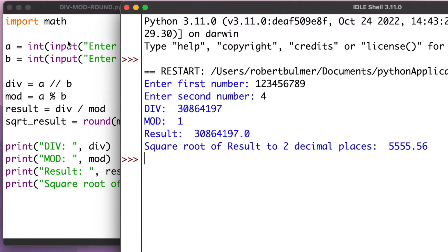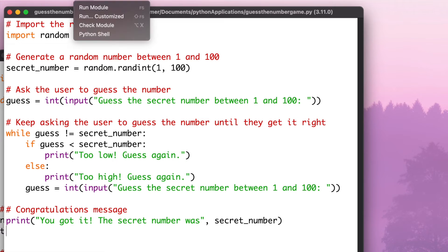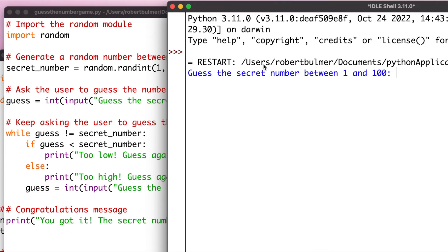That is using an external library, but also internal libraries to run the various requests. When we come to importing random — to generate a random number in Python — we have the random module library, which needs to be imported. The random function allows us to generate random numbers between zero and one, generating floating point random numbers. It is the default random generator function. I'm going to run this program, which is importing random, and it's going to be a secret number — a little guess the number game. Running this in Python, it's telling me: guess the secret number between one and one hundred.